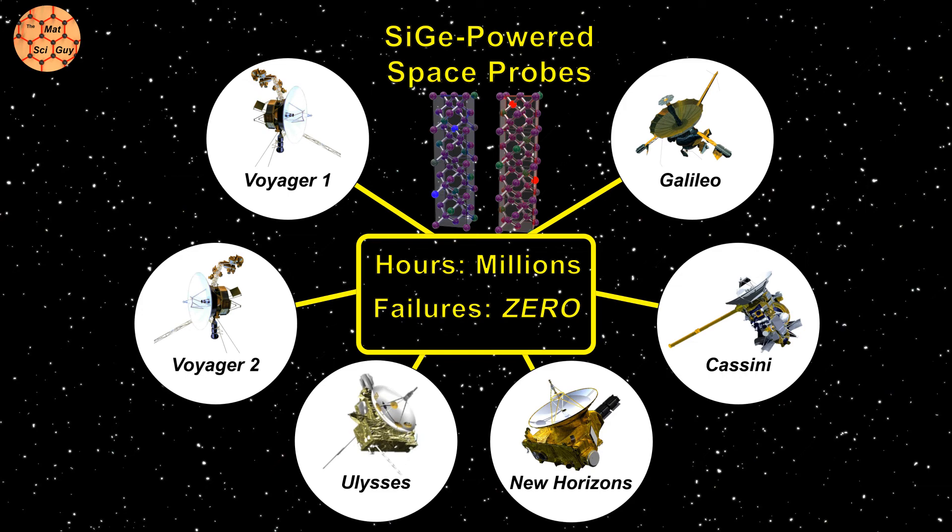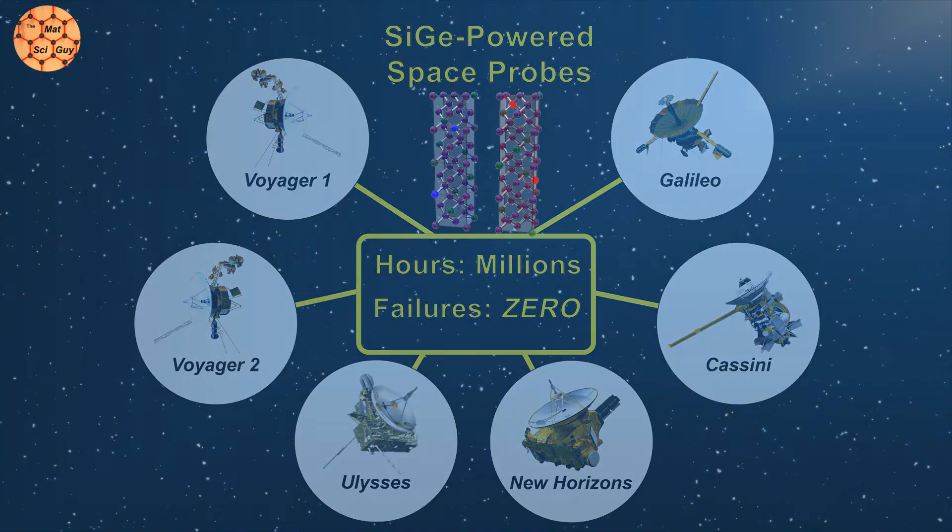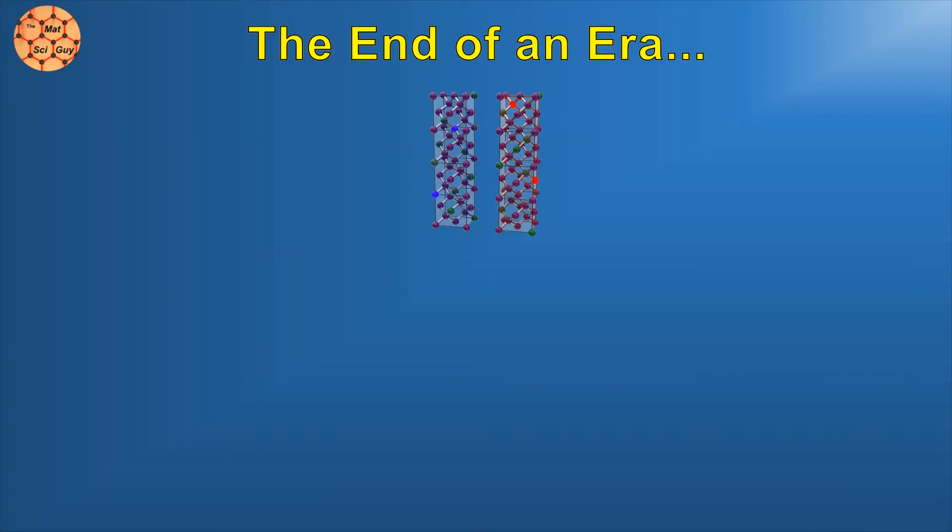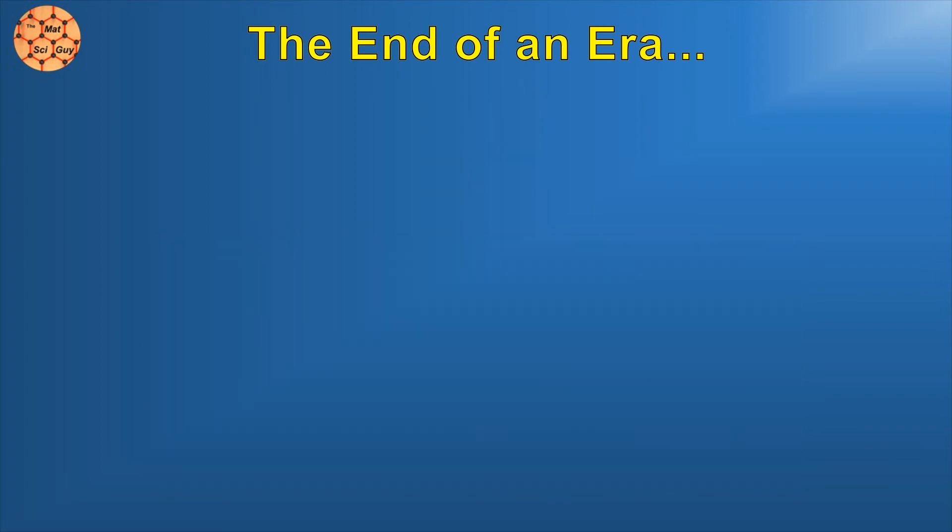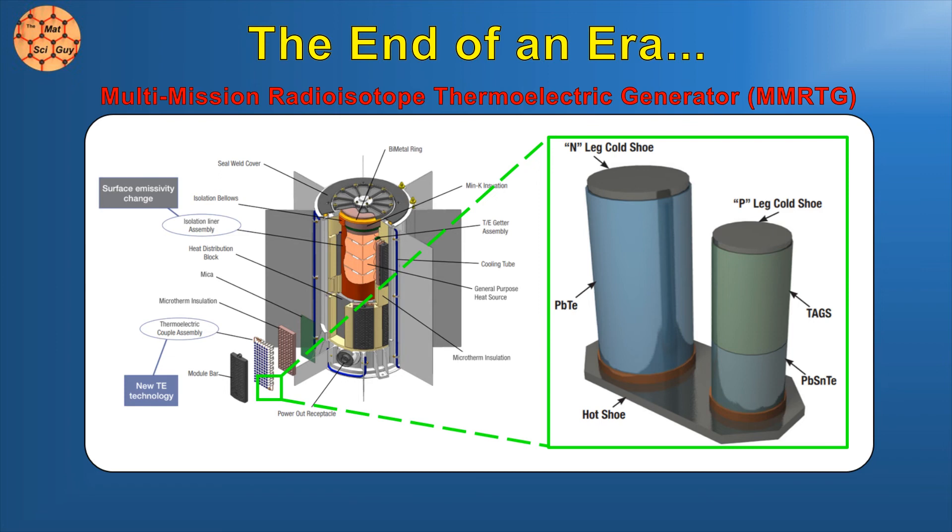But nothing good can truly last forever, and sadly, this amazing material is no different. The truth is that even at the time when Voyager was launched, silicon germanium wasn't strictly the best thermoelectric material from a ZT standpoint. It was used because it was reliable over a broad temperature range, fairly easy to shape, and applicable to both N-type and P-type sides of the generator. But there were always higher performance materials. It's amazing that silicon germanium lasted for as long as it did, but in 2010, NASA announced that the next generation of generators will use alternatives like lead telluride and TAGS.